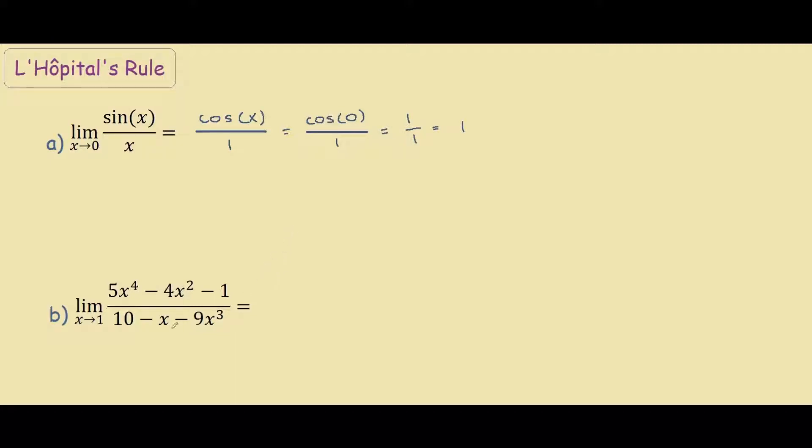Okay, so moving on to the second example, we have the same problem. If we substitute x equals one into the denominator, ten minus one is nine minus nine is zero. So we have the indeterminate case again.